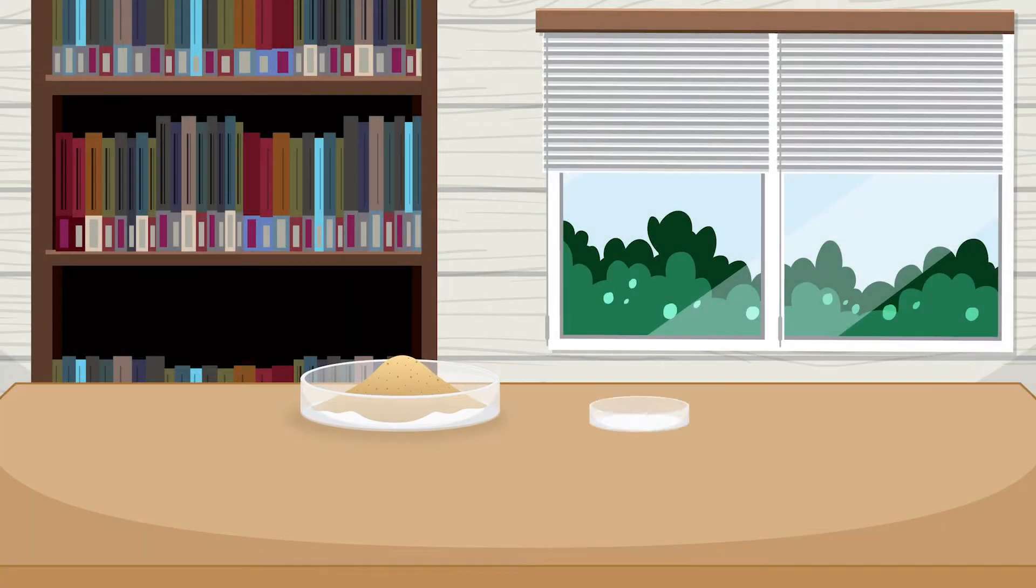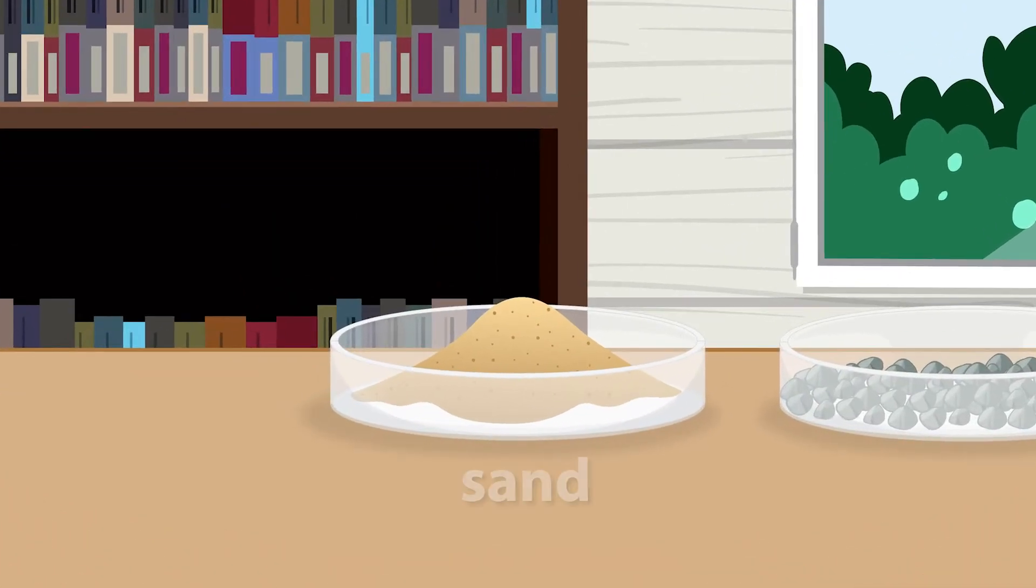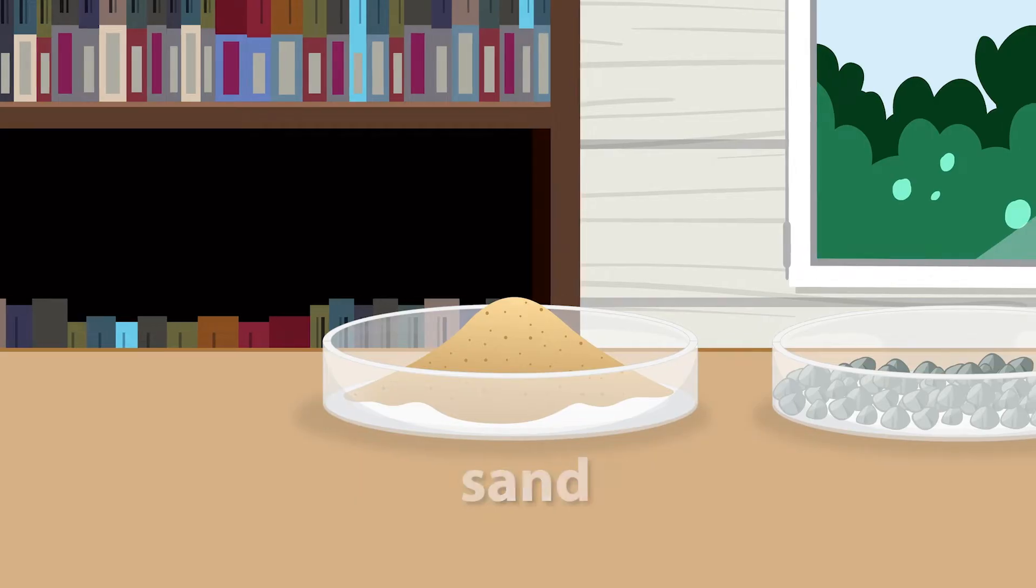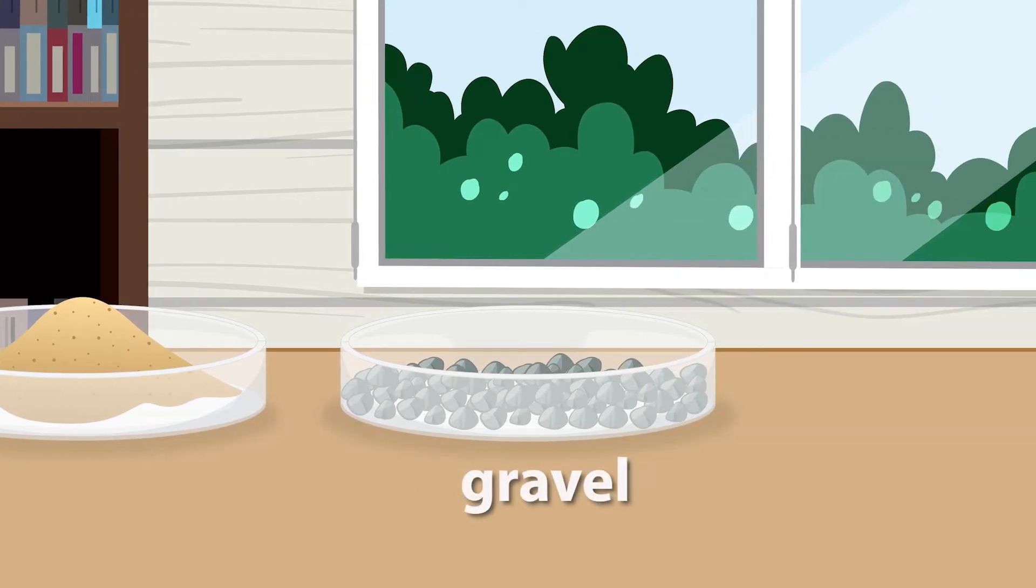Here we have a dish of sand and a dish of gravel. Sand is made up of tiny rock particles, while gravel consists of larger rock fragments.